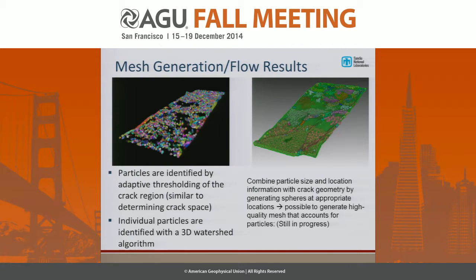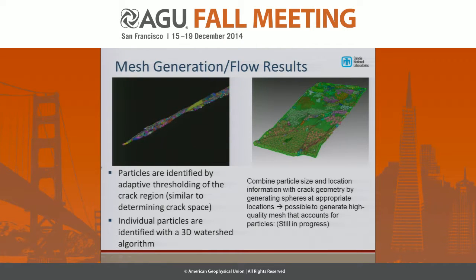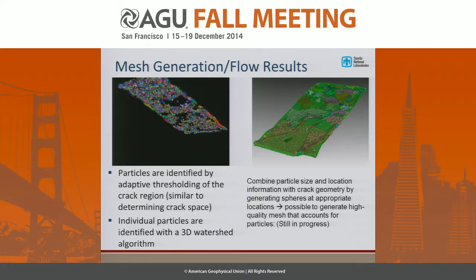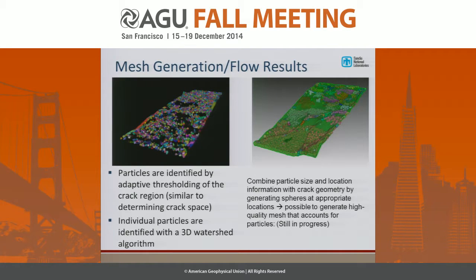Then we put the particles back in. To do that, we do an adaptive thresholding of the crack region, and then the particles are identified with a 3D watershed algorithm. You can see a rotating view of what those particles look like in 3D space. The actual particle geometry would make this computationally prohibitive, so the center of every particle is selected and a sphere is placed in the same location. Doing flow simulations through this model is still in progress but coming in the near future.